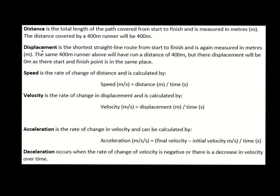Displacement is very similar to distance in that it's also measured in metres, but it is the shortest straight line route from start to finish. So the same 400 metre runner will have run a distance of 400 metres, but their overall displacement will be 0 metres, as the start and finish point are the same place. Obviously that's not going to give us much useful information if you do displacement divided by time when trying to work out velocity.